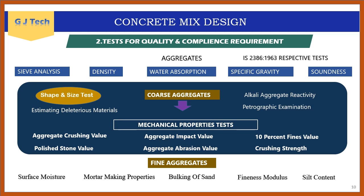Bulking of sand: when sand has moisture there is a volume increase. To obtain the exact volume of fine aggregates in concrete, we need to estimate the bulking of sand. Mortar-making properties give a compressive strength value obtained by mixing fine aggregate with cement and water. Surface moisture is used for moisture corrections.